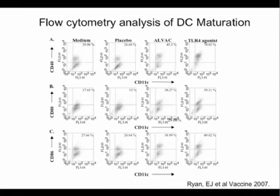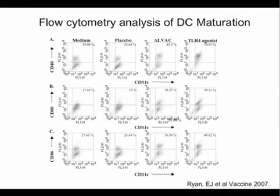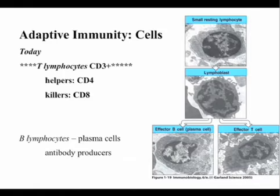Here you have dendritic cells grown in medium alone — the normal cell culture medium — and they express a little bit of CD40. Cells expressing CD11C, a marker that all dendritic cells express, are also shown. When you add a toll receptor agonist to these cells, you can see this population has moved upwards — now all of these cells express CD40. This is what you mean by upregulation of co-stimulatory molecules and how you would look at it in an experiment.